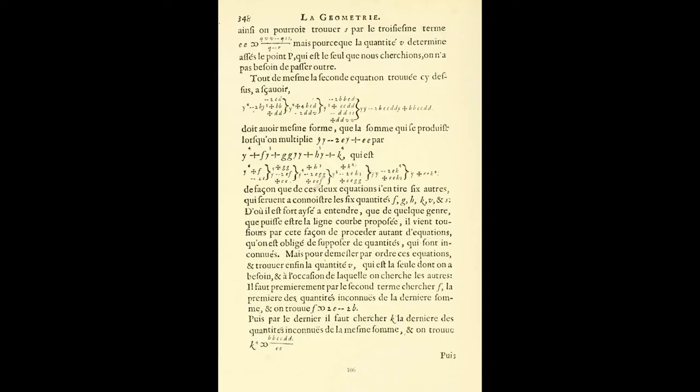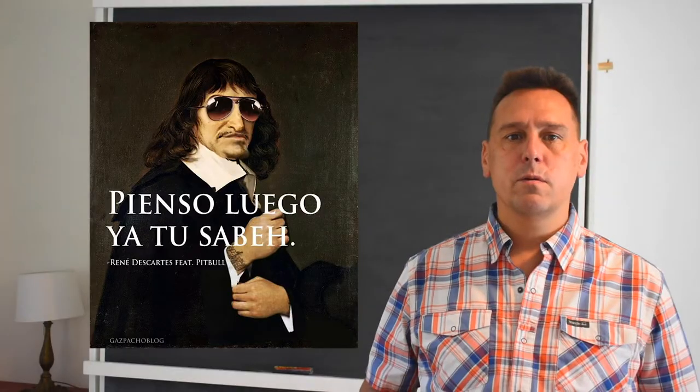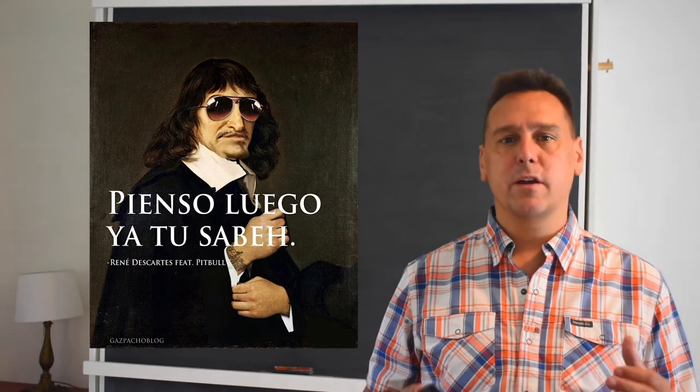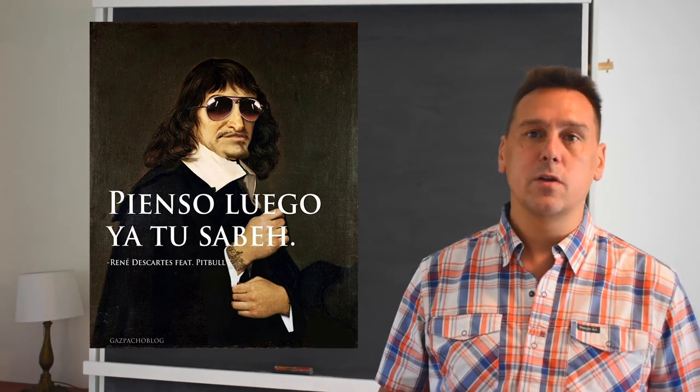Descartes, instead of an equal sign, he writes what looks to me like a backwards proportional sign, sort of like a fish. And instead of x squared, he'll write xx. But despite these differences, it's not too hard for a modern reader to follow the equations in his work. Well, at least as far as anyone follows equations. Descartes was a big deal, as you may have heard.